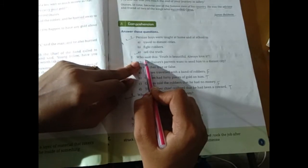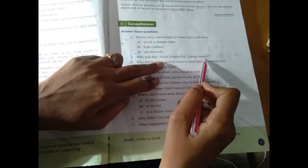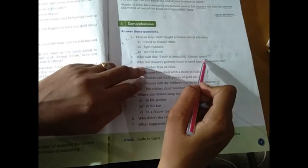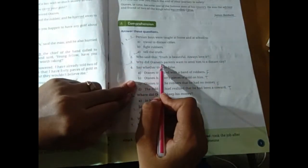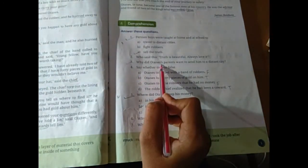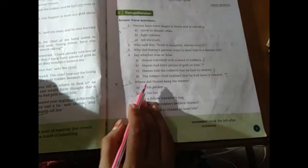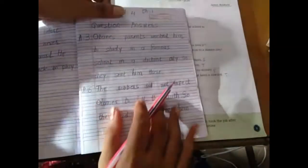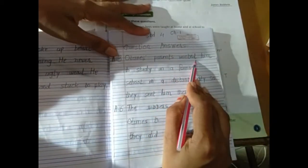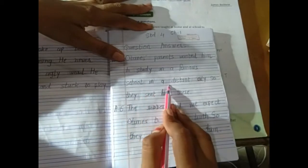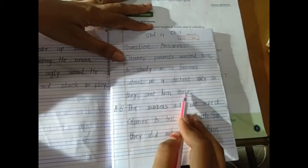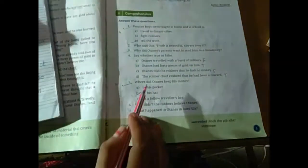Second, who said please? Truth is beautiful, always loving. That truth is. What is mother? Okay? Now, why did Hortense's parents wants to send him to a distant city? So they sent him there.